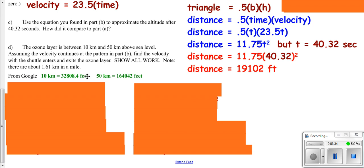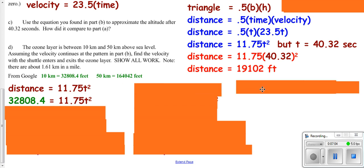We know our distance equation is 11.75t squared. We know our distance in feet, so I'm going to plug that in. It's not going to tell me my velocity, but it's going to tell me my time. If I solve for time by dividing by 11.75 and taking the square root, I get my time - how long it takes to get up to 10 kilometers.